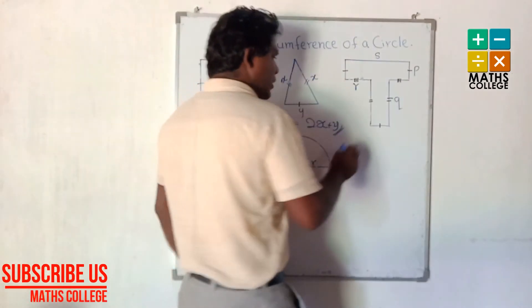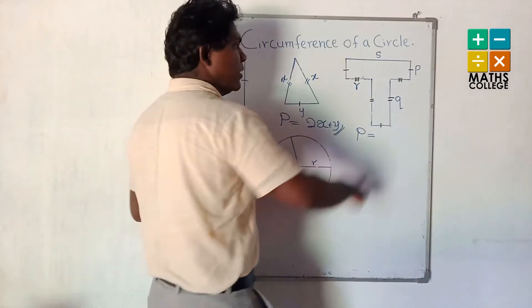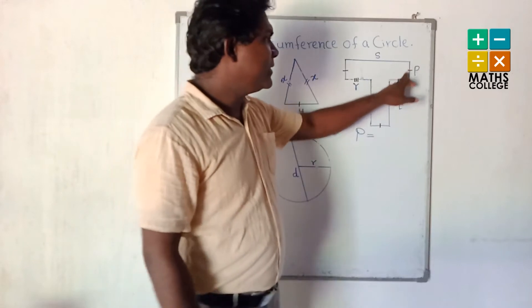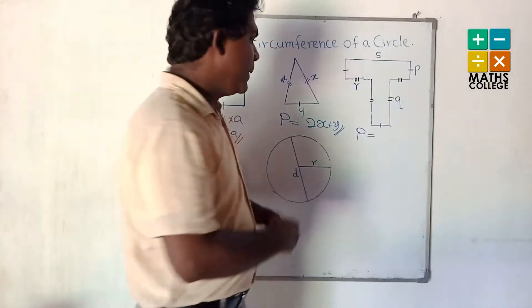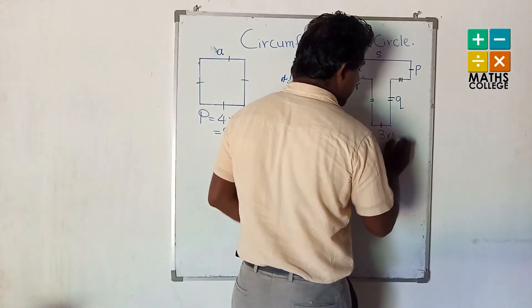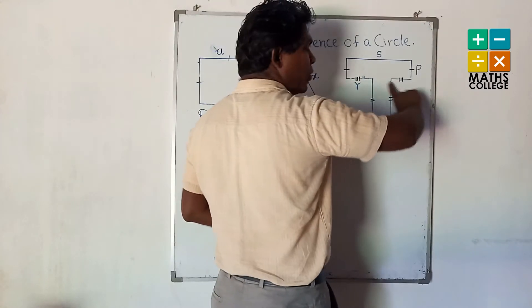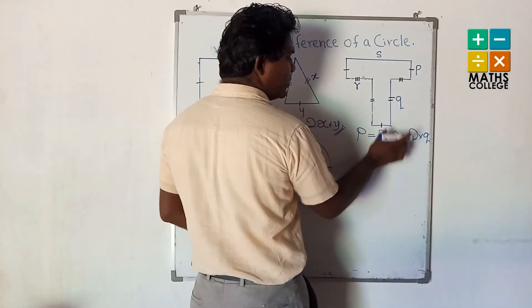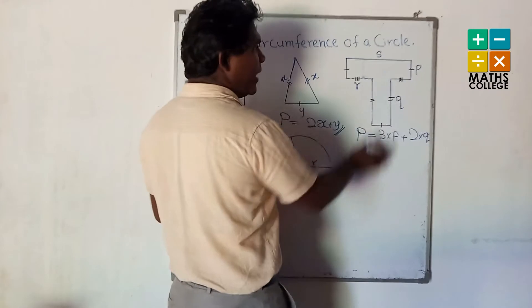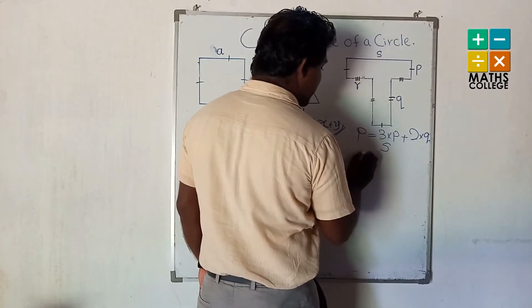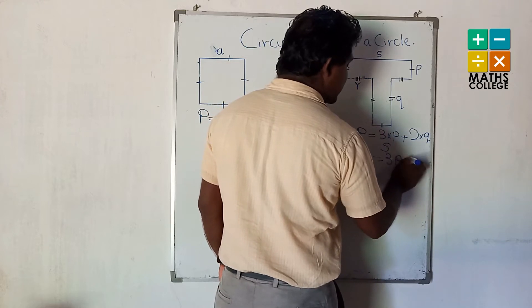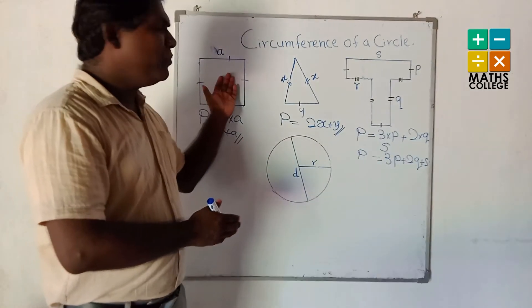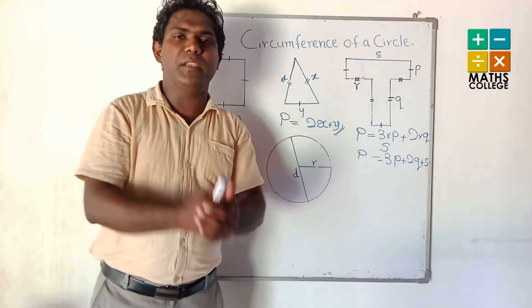For this irregular figure also we can write the perimeter. We count: side P appears 3 times, so we multiply by 3. Then add the length of Q — it appears 2 times, so 2Q. And also add the remaining length L. So P equals 3P plus 2Q plus L. We found the perimeter for a square, triangle, and this figure. But here we have a circle — how do we find the perimeter of a circle?